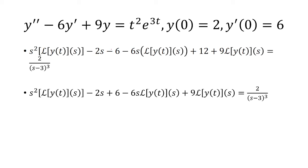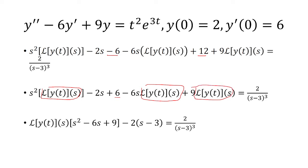And now we can simplify. So we have a negative 6 plus 12, which is going to give me positive 6. And then we can factor out a Laplace transform of y of t. So we have it in these three terms, and what we're left with is s squared minus 6s plus 9.